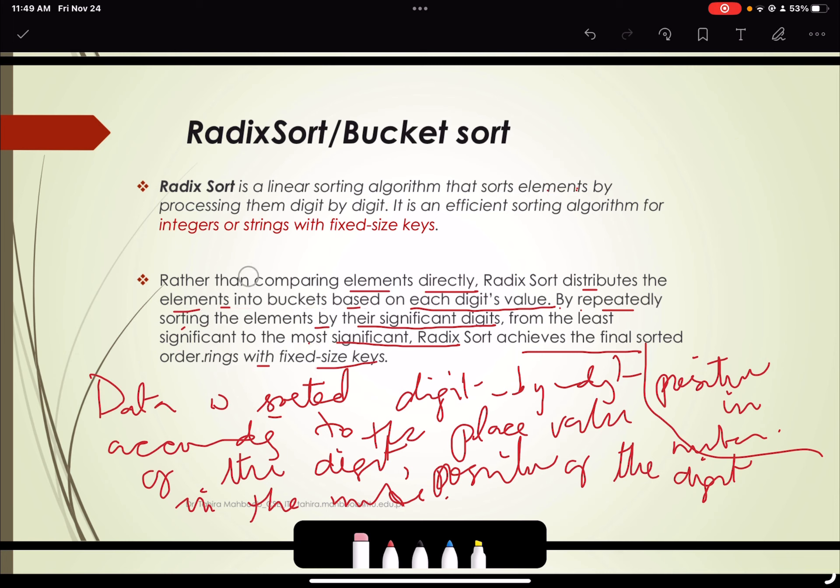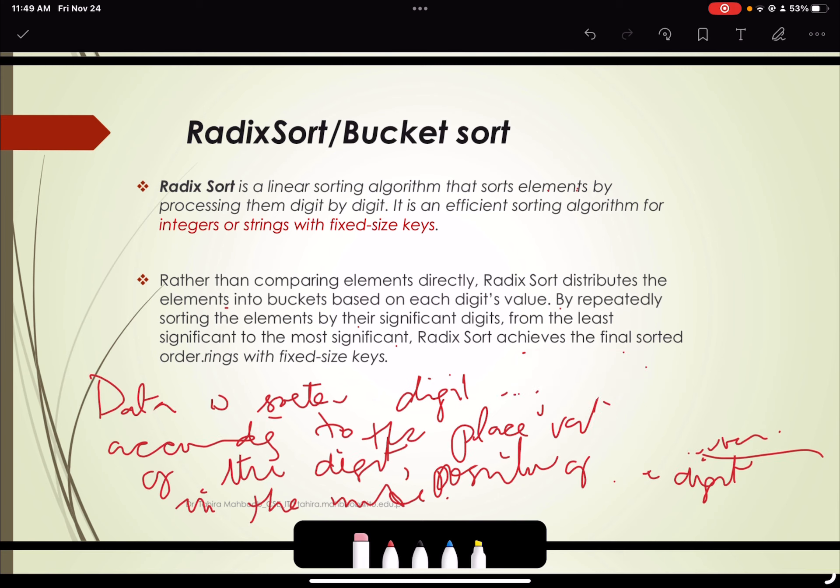We have a fixed size base to sort all data. So what is the place value? For example, we have this number 421. So one is at ones place, two is at tens place, and four is at hundreds place. So this is the place value of a number.